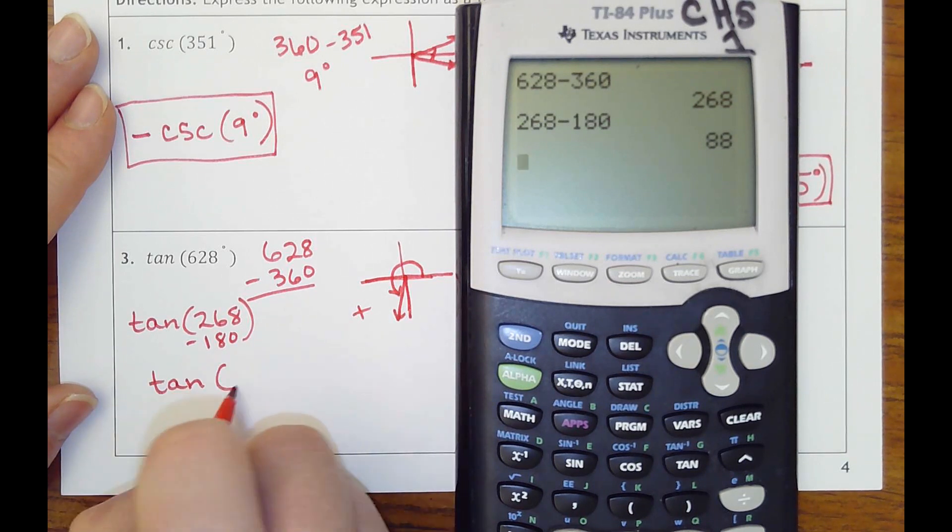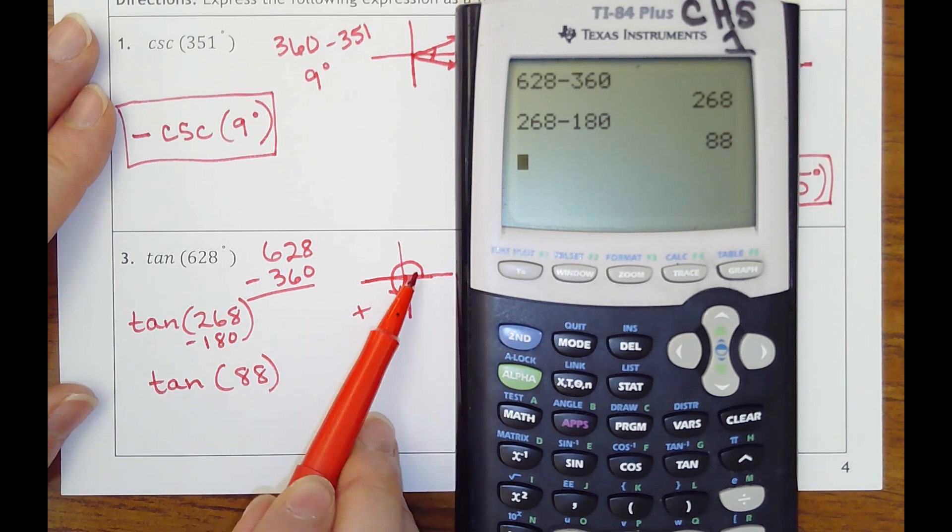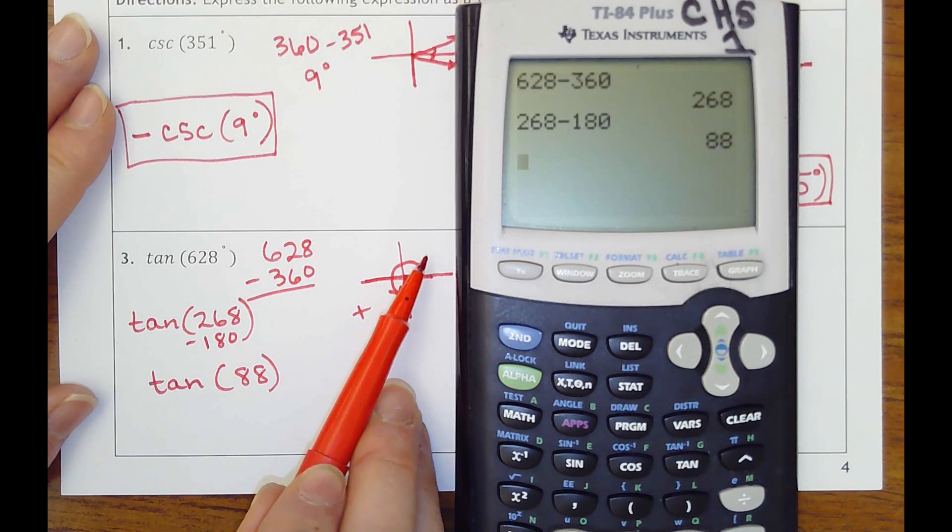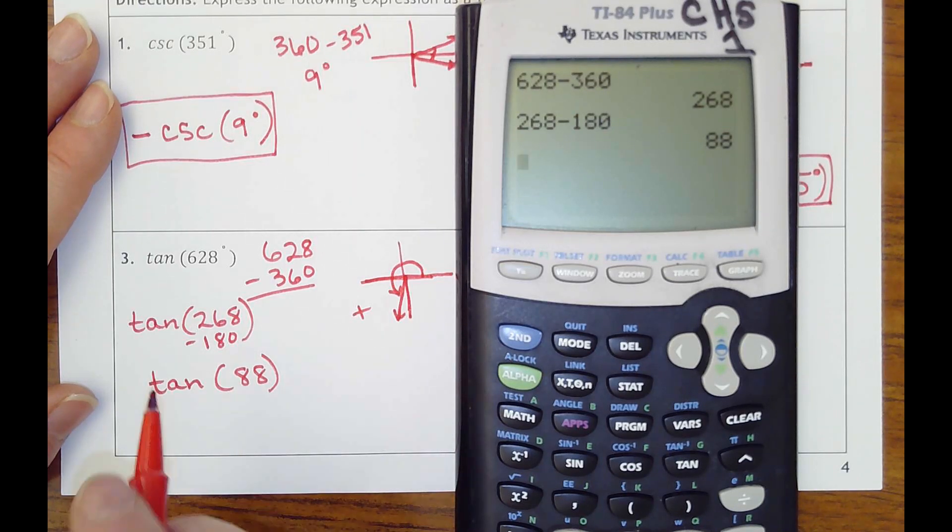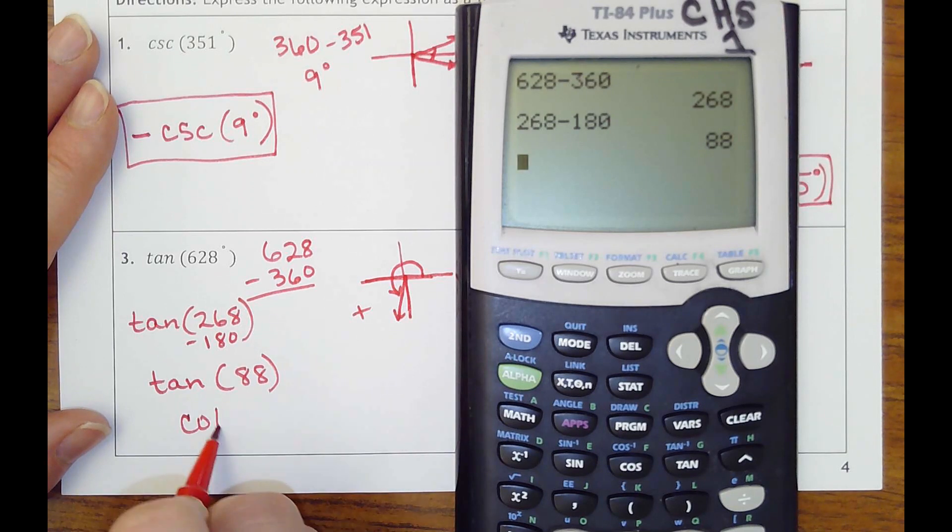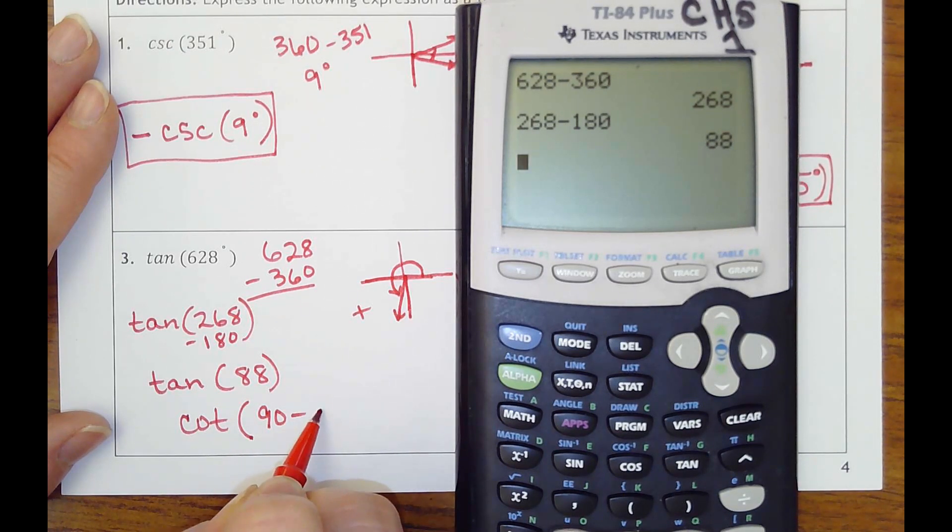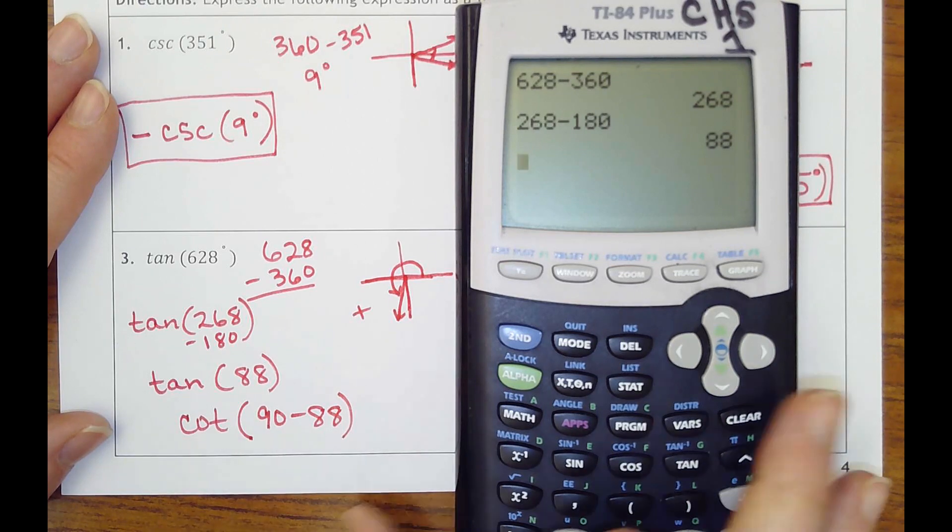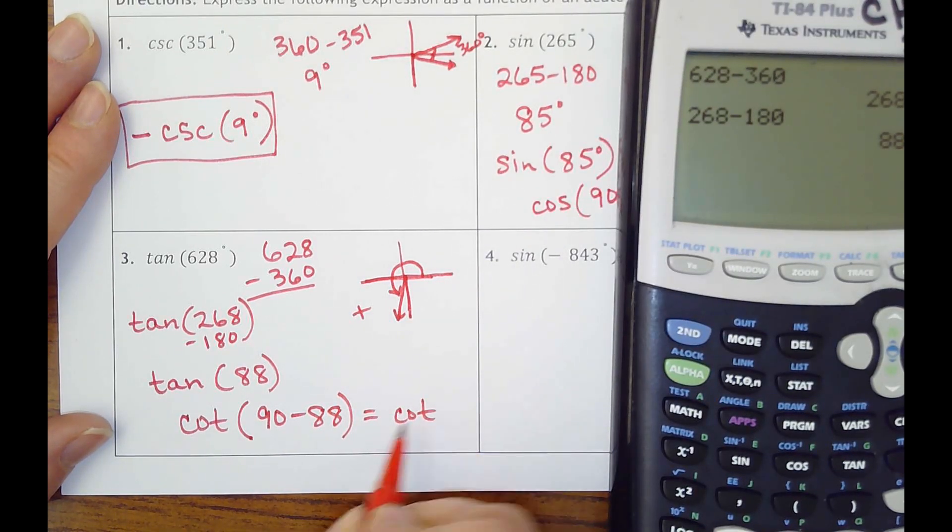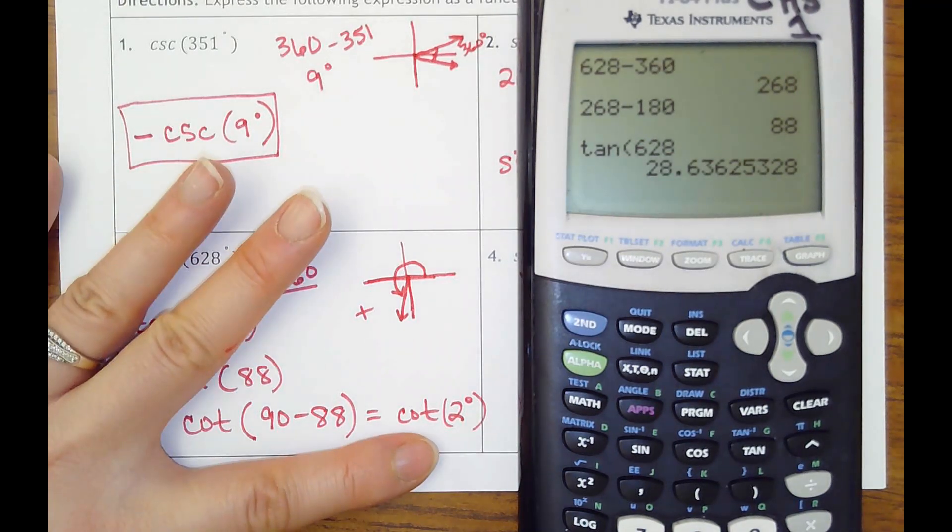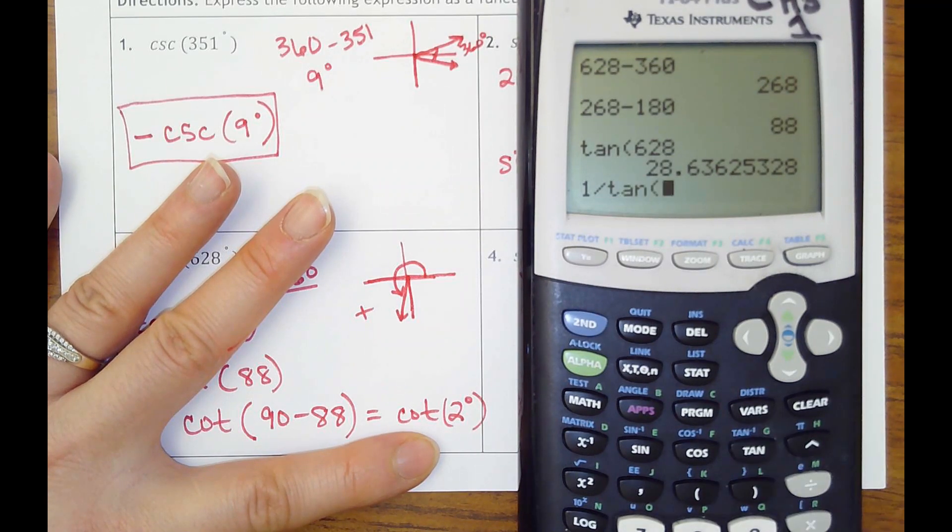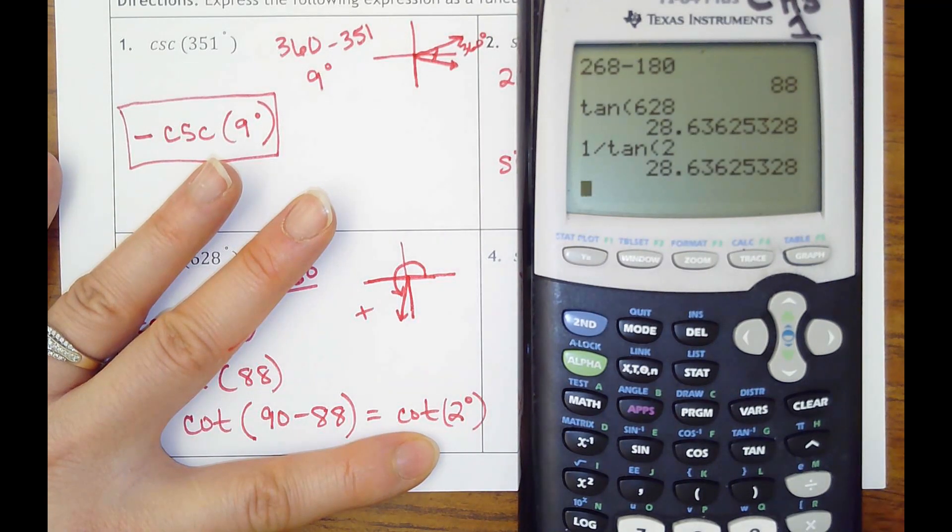So that should still be the same other than, yeah, now it's going to put me in quadrant one, but that'll be okay because they're still positive there, but that's not less than 45. So now I need to think of its co-function. It goes with tangent is co-tangent of, it's always 90 minus my angle. And so co-tangent of 2 is what we would get, but I would check just to make sure that tangent of 628 is the same as co-tangent of 2, which I'll have to do one over tangent of 2. And it is, they're both positive. So that one's good.